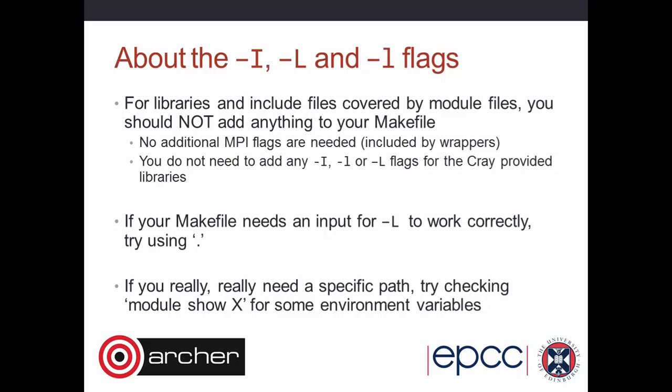In a makefile or build script, you typically have lots of '-I', '-L', and '-l' flags to specify where include files are found, where libraries are stored, and which ones to link in — these are not needed on Archer. You should get rid of them and control that externally by loading the appropriate module. If a makefile absolutely insists on something for '-L', just specify '-L.' to fool the compiler. If you really need a specific path, do 'module show FFTW' and you'll see the environment variables. But hard-coding paths into makefiles is dangerous because they won't update automatically when software is updated.